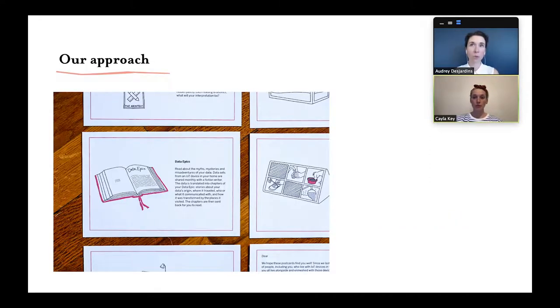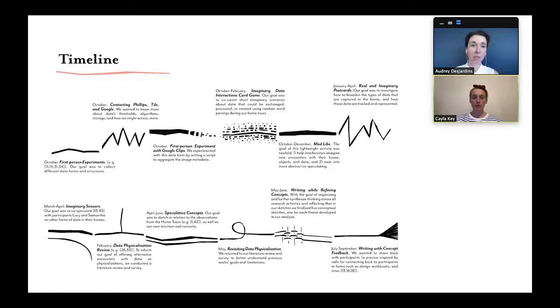To address this question, we point our gaze towards a recent project from our design research studio. This project foregrounded data's lively, local, and entangled encounters with home dwellers. We worked through various methods in parallel: first-person experiments with our own data, a precedent study around data physicalization, home tours with 10 people including bespoke card game and Mad Libs, as well as speculative concepts to continue to imagine with participants. What you see here is a timeline of those activities represented via various types of line.